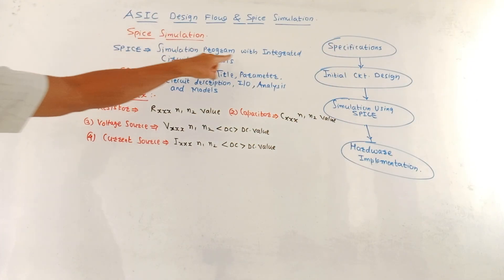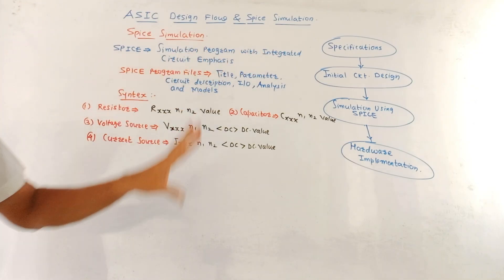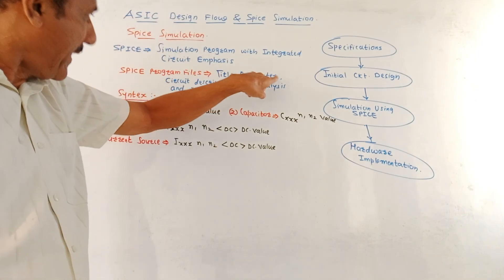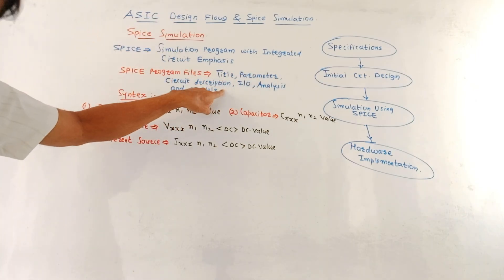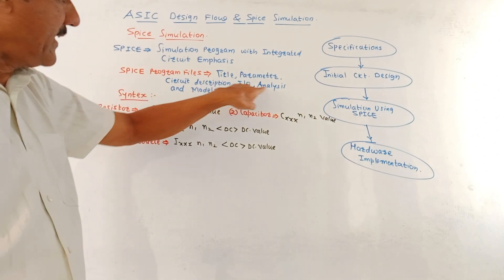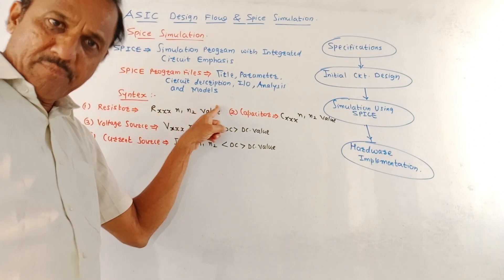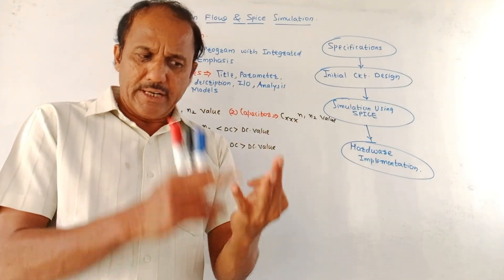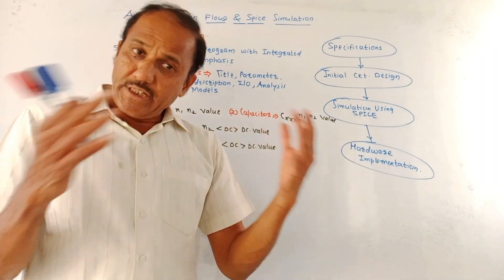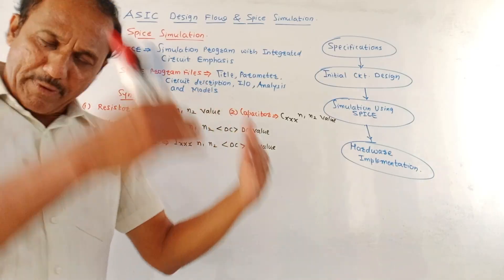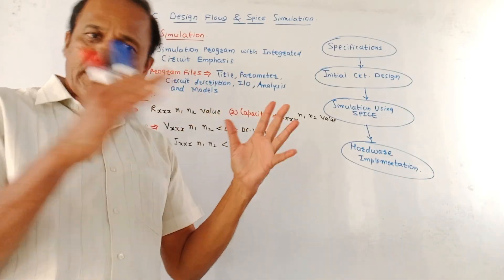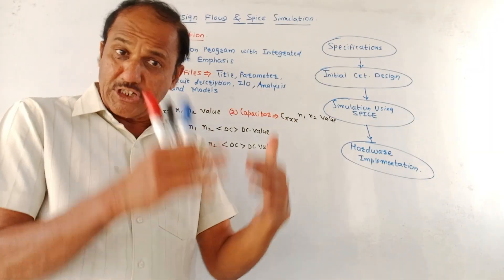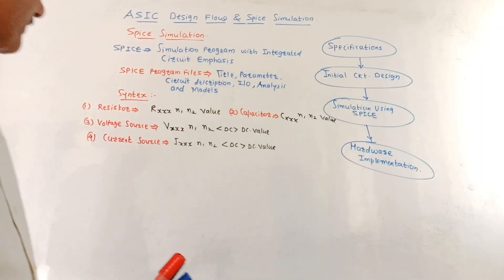As I said, SPICE is simulation program with integrated circuit emphasis. The SPICE program file usually includes the title, then parameter, then circuit description, input and outputs of the circuit, analysis and models. The different components that are used in SPICE simulation are resistor, inductor, capacitor, then voltage and current sources. It includes both, that is dependent and independent voltage and current sources. It also includes active components, then it includes transistors, then MOSFETs and so on.